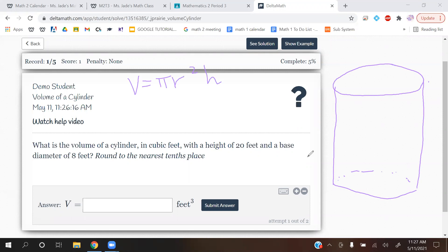Okay, so we want the volume of the cylinder in cubic feet with a height of 20 feet, so this is going to be your h value. And it will be represented here as the vertical height of your cylinder, and it has a base diameter of 8 feet. So that means from this end all the way to here, you have 8 feet.